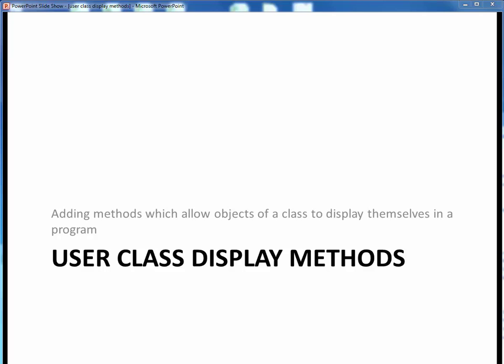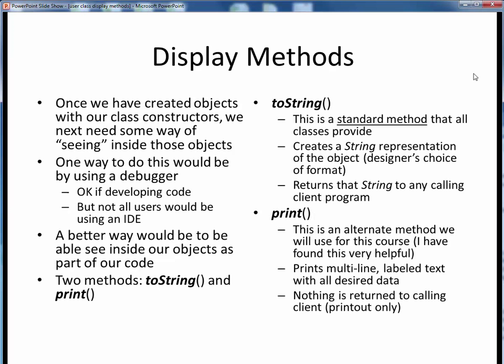In this video lecture, we'll show how to add methods to a class which will allow objects of that class to display themselves in some program. Let's take stock of where we're at so far in building our Person class. We've seen how to add an instance variable and how to add a couple of constructors so that now we can create new objects of the Person class type.